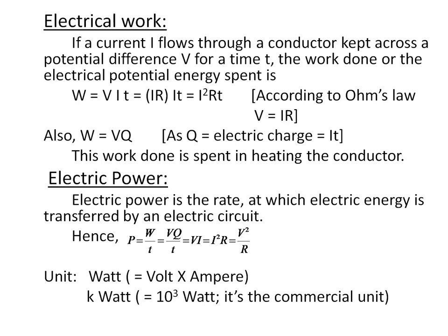The unit of electric power is the watt. One watt is equal to one volt into one ampere. In commercial use, kilowatt is the most commonly used unit. We know that kilo means 10 to the power 3, so one kilowatt is equal to 10 to the power 3 watts.